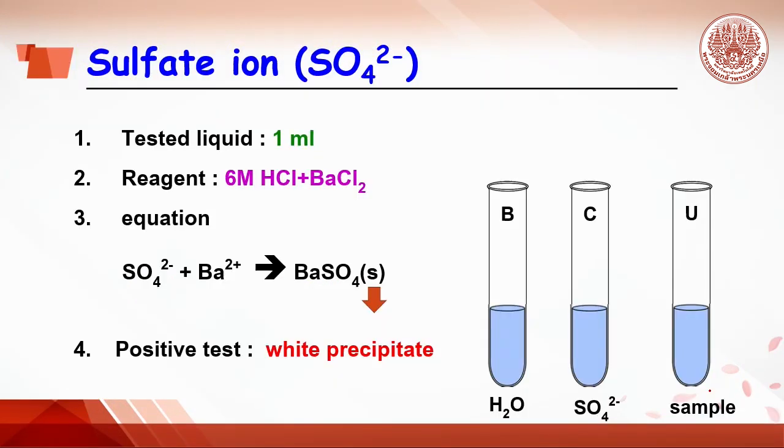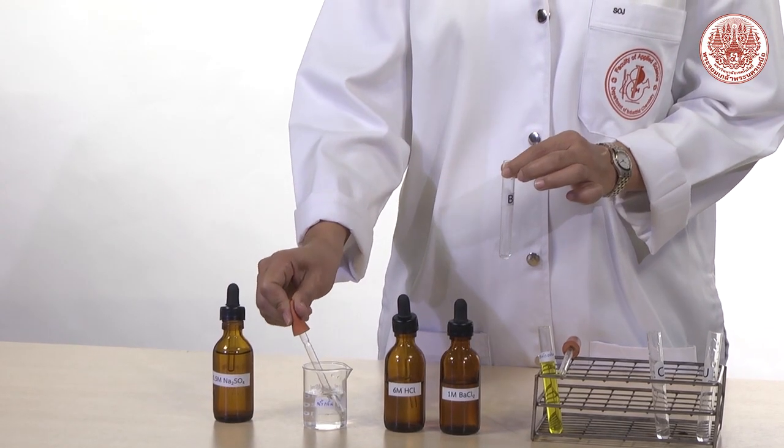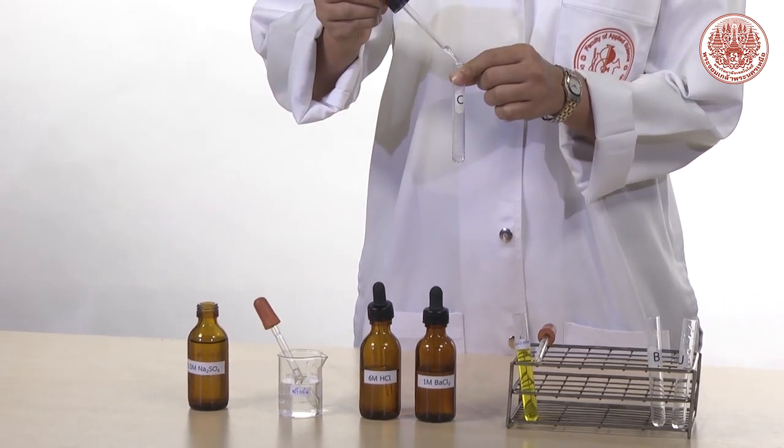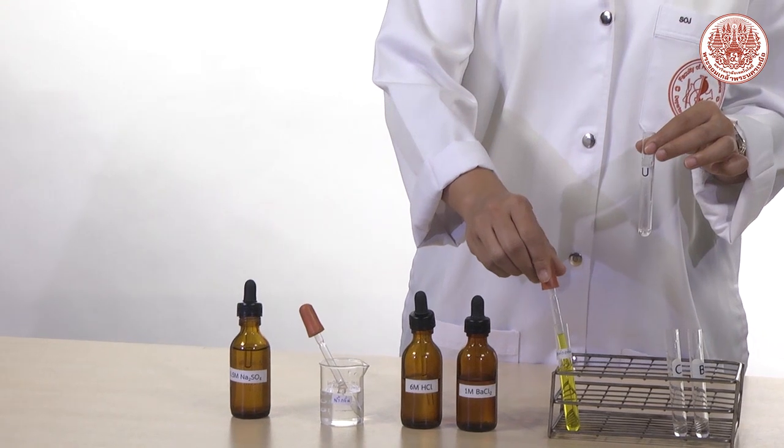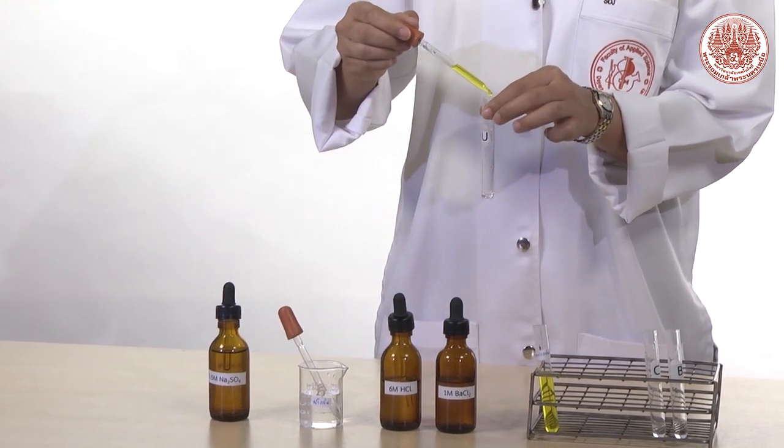Second ion is sulfate ion. Do the same as B tube, C tube, and U tube by adding 20 drops of water, sulfate ion from sodium sulfate, and sample.